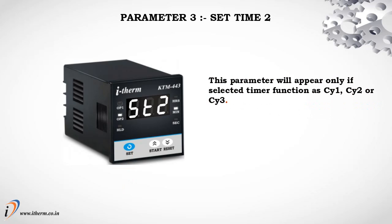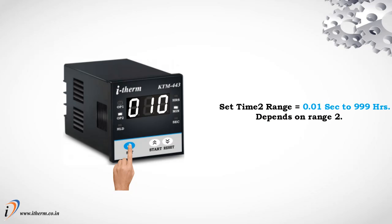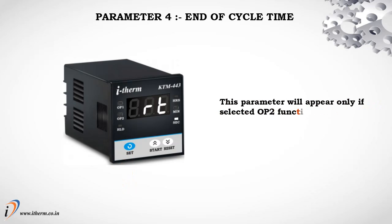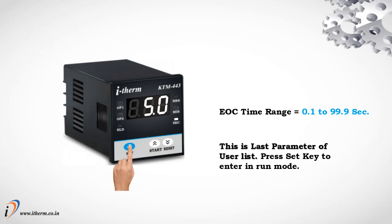Parameter 3: set time 2. This parameter will appear only if the selected timer function is cycle 1, cycle 2, or cycle 3. For cycle 1, sets the on time for output 1. For cycle 2, sets the off time for output 1. For cycle 3, sets the reverse time for output 2. Set time 2 range: 0.01 seconds to 999 hours, depending on range 2. Parameter 4: end of cycle time. This parameter will appear only if output 2 function is set to end of cycle. End of cycle time range: 0.1 to 99.9 seconds. This is the last parameter of the user list. Press the set key to enter run mode.